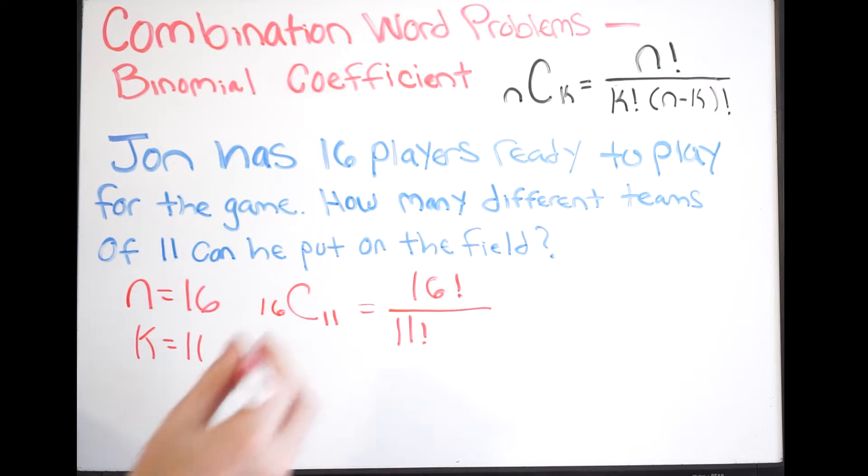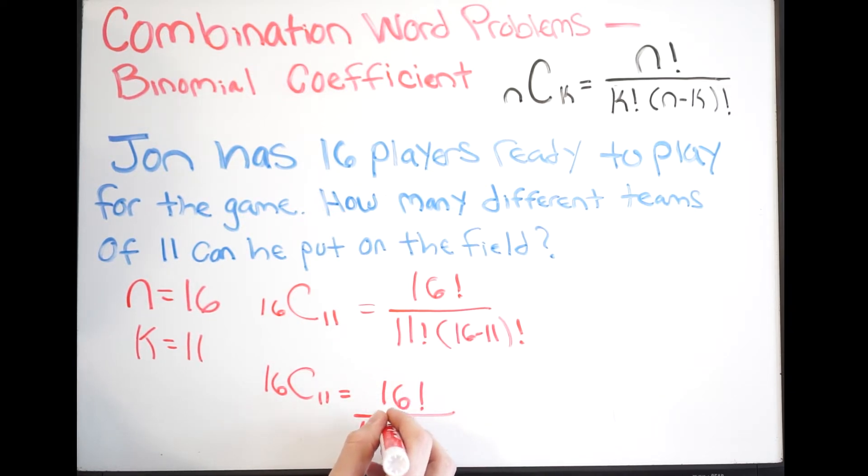And then I have n minus k here so that's going to be 16 minus 11 and then this will be factorial. So just cleaning this up we get 16 choose 11 equal to 16 factorial over 11 factorial times...